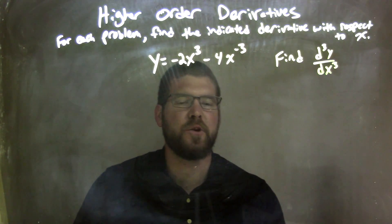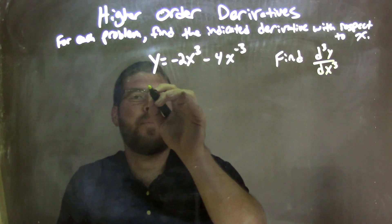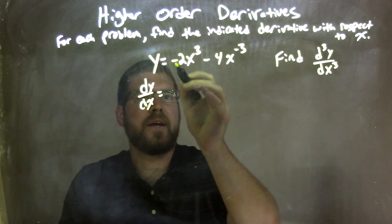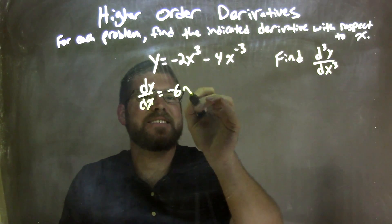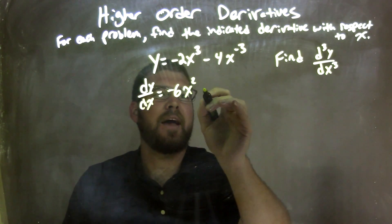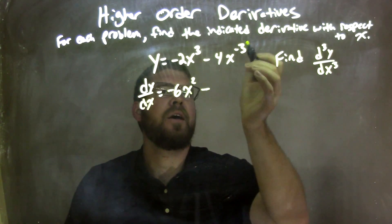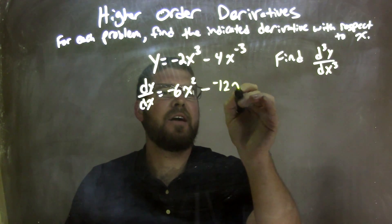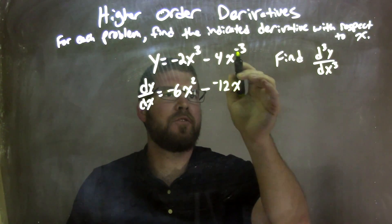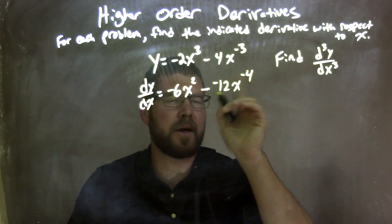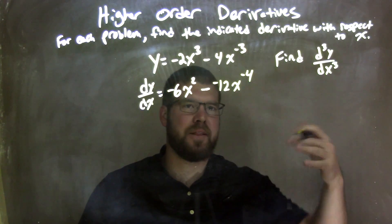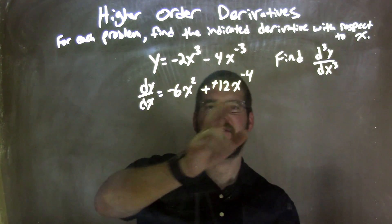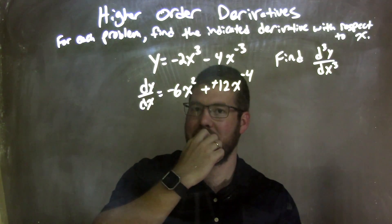First thing I'm going to do is find the first derivative. To do that, I apply the power rule. dy/dx: 3 comes down, 3 times negative 2 is negative 6x squared. Then we have a minus — negative 3 times 4 is negative 12x, and we subtract the exponent by 1, so negative 3 minus 1 is negative 4. Subtracting a negative is the same thing as adding a positive, so now we have plus positive 12x to the negative 4th power.